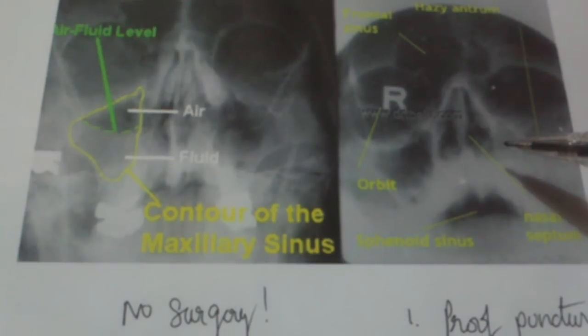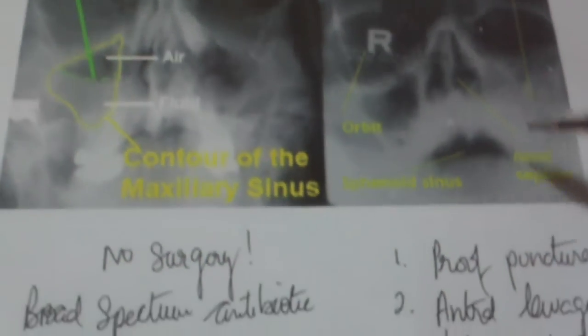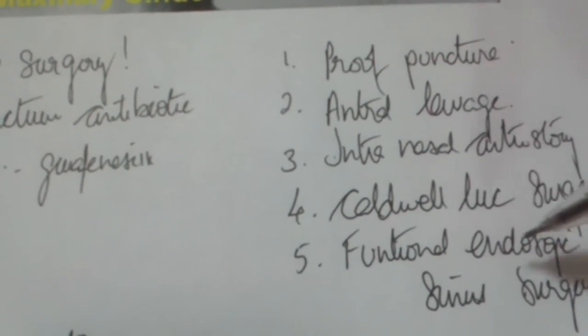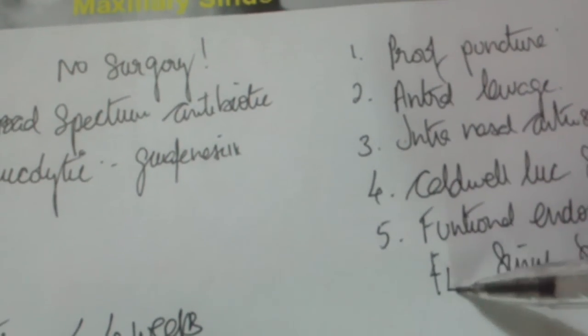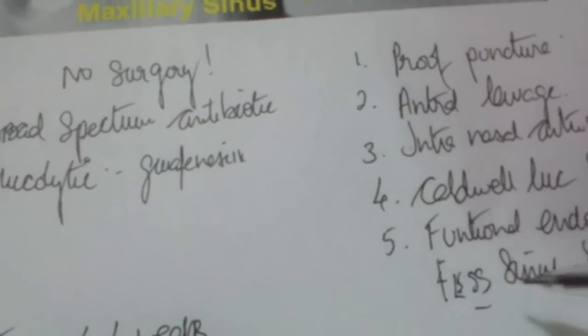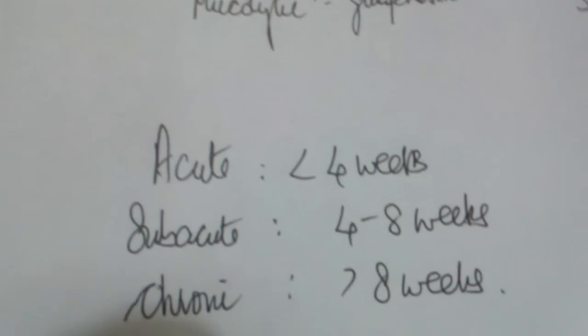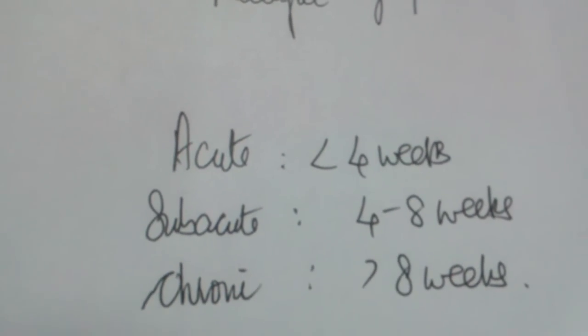Today, we can make an opening in the middle meatus and revert the sinus back to its normal functioning state. Because it reverts to normal functioning and the procedure is done using a sinus endoscope, it is called Functional Endoscopic Sinus Surgery — a term coined by David Kennedy, also called FESS. Acute sinus disease is less than four weeks, subacute is four to eight weeks, and chronic sinus disease is of more than eight weeks duration.